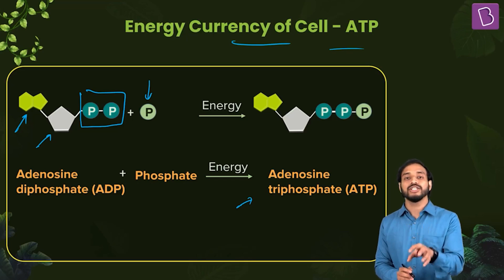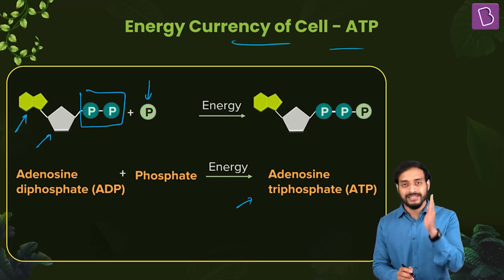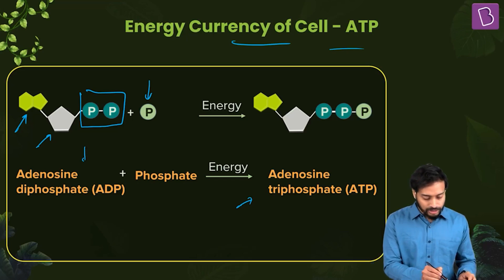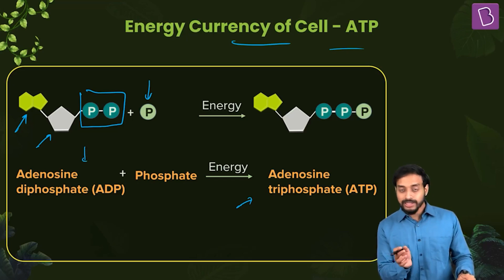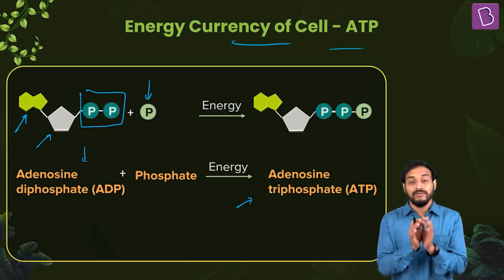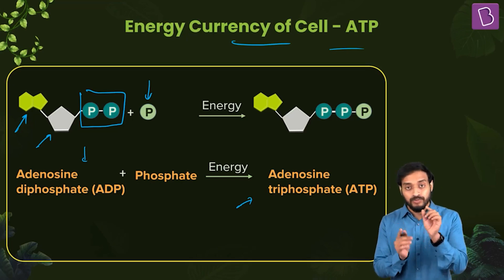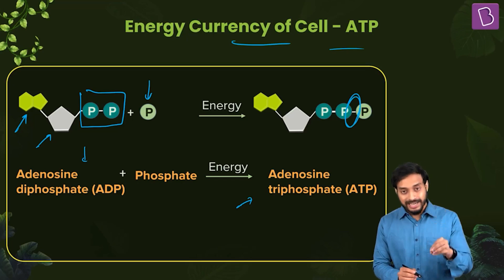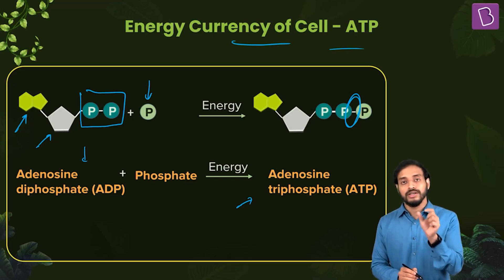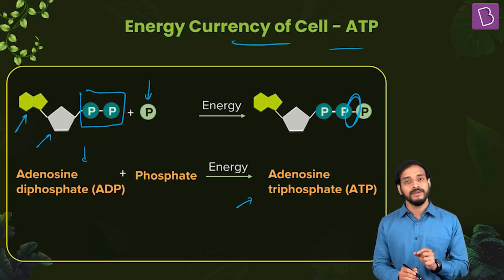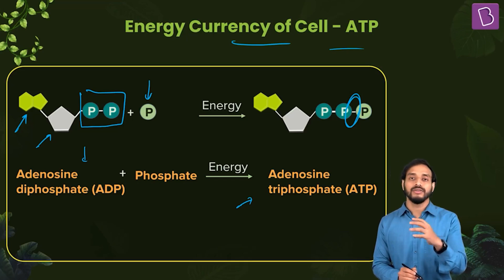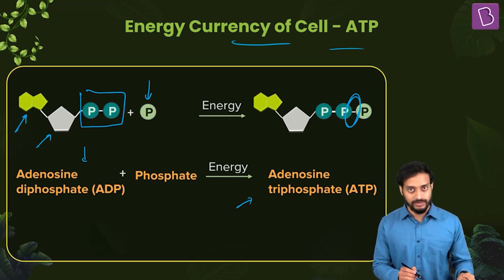When this high-energy bond between the second and third phosphate is broken later on, the energy is released and utilized to perform various cellular activities. So adenosine diphosphate plus a phosphate group gives ATP; the bond formed is a high-energy bond where energy is stored, and breaking it releases energy for cellular processes.